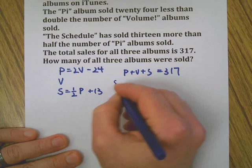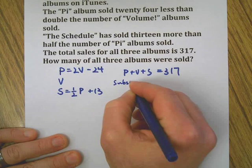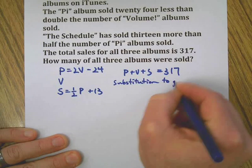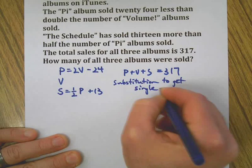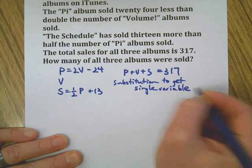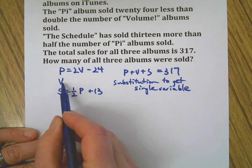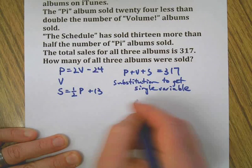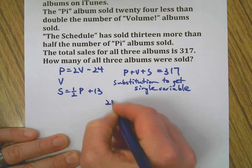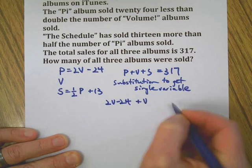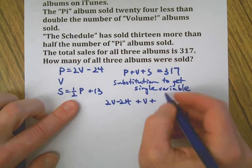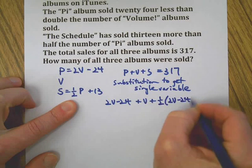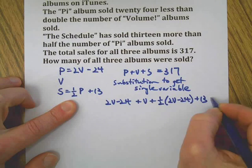We're going to use substitution to get a single variable. Single variable is a fancy way of saying one letter. Looks like the variable we should use is V because that's by itself, and we know P, the Pi album, in terms of V. So that means 2V - 24 plus V plus 1/2 of (2V - 24) + 13 equals 317.